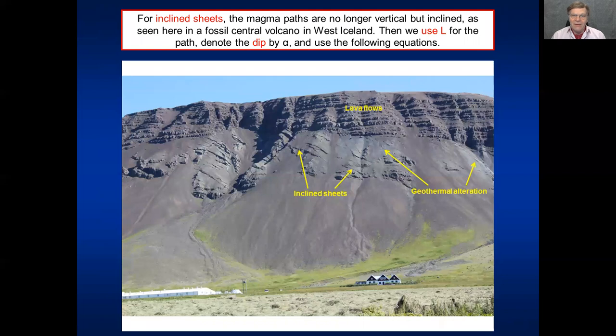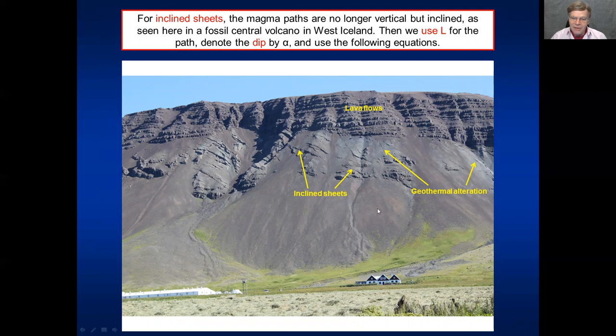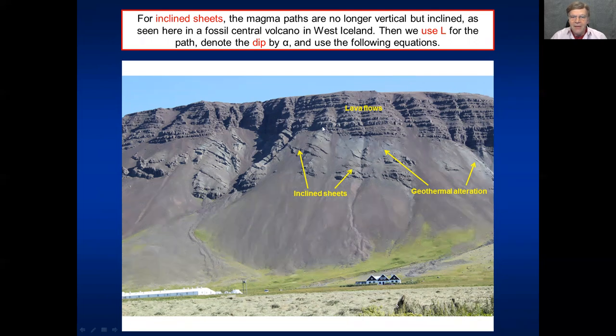But, as I said earlier, some of the feeders are not vertical, they're not vertical dikes, they're inclined sheets. We see a number of them here in an old eroded central volcano in West Iceland. And then we need to take the dip alpha into account. Well, the equations are basically the same. We use simply L for the path of the inclined sheet, or the magma flow along the inclined sheet, and then we use the alpha for the dip.